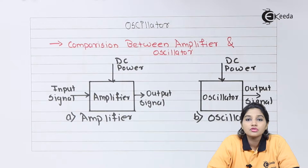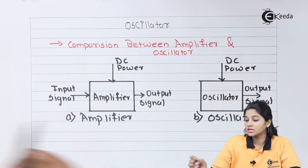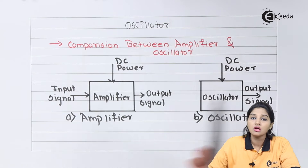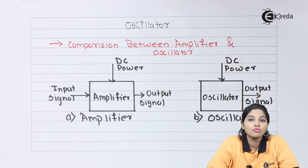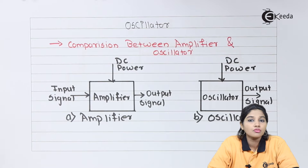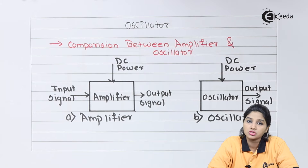This high energy level of the amplifier output is obtained using an external DC power supply. Basically, an amplifier converts DC power supply into an AC signal source having the same frequency as the input signal. So if there is no input signal, we cannot get an output — the output of the amplifier is controlled by the input signal. Whereas in case of an oscillator, as soon as the DC power supply is turned on, the oscillator starts producing an output signal.